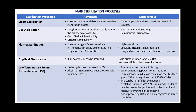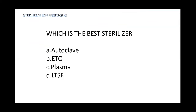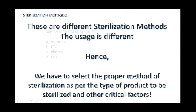In plasma sterilization, turnaround time is very good, and we can have very good sterilization efficacy for powered surgical instruments and complex surgeries. As one of the earlier speakers mentioned, for robotics we definitely need quick turnaround time solutions. A common question I face is: which is the best sterilizer? The only answer is that these are different sterilization methods with different uses — we have to select the proper method based on the type of product to be sterilized and other critical factors.